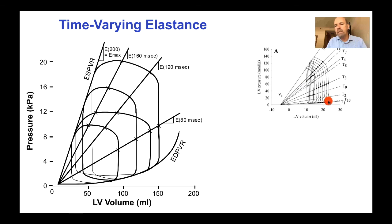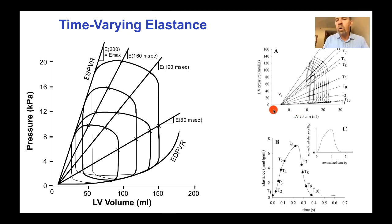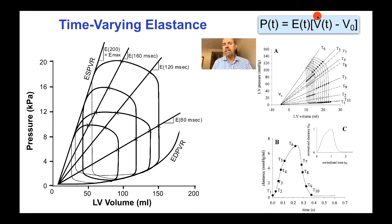Here we see real data plotting instantaneous pressure-volume relationships during isovolumic contraction, ejection, and isovolumic relaxation. Plotting the slope of these curves during the cardiac cycle gives the elastance as a function of time — the so-called time-varying elastance. This is a very useful view of cardiac pump function because, despite the complexities of cardiac muscle contractile properties, at the level of the whole chamber the ventricles behave as time-varying elastances where the pressure-volume ratio at any phase of the cardiac cycle is constant and changes as a function of time, reaching a maximum at end-systole. The approximation is also made that the intercept of the pressure-volume relation, V0, is constant — a fairly good approximation. This allows a simple model: instantaneous pressure equals instantaneous elastance times (instantaneous volume minus V0).